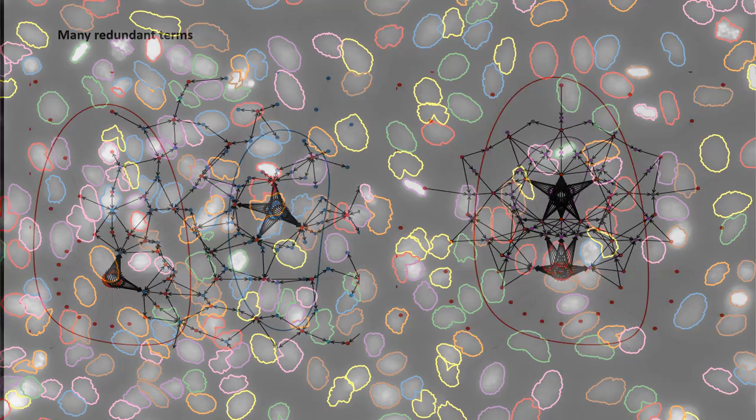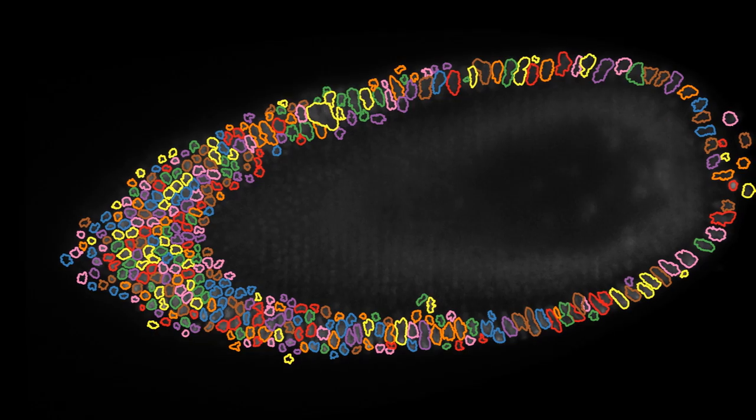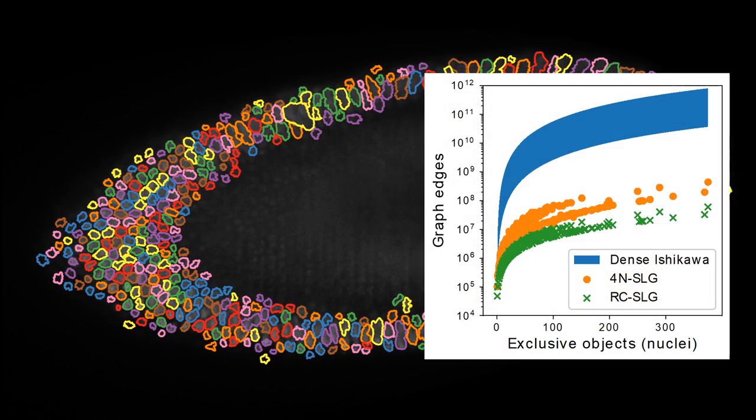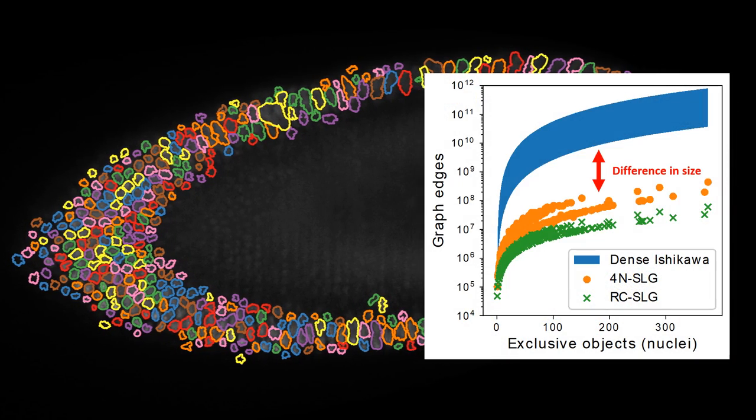We test the performance of our method on a large image dataset with ground truth segmentations. The results show that we can reduce the graph size by several orders of magnitude compared to the traditional Ishikawa method without reducing accuracy.